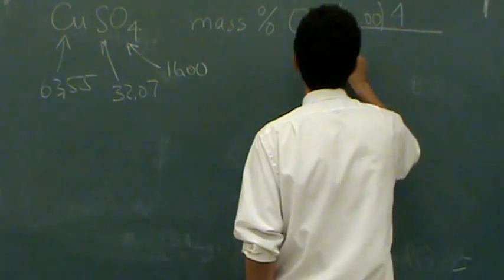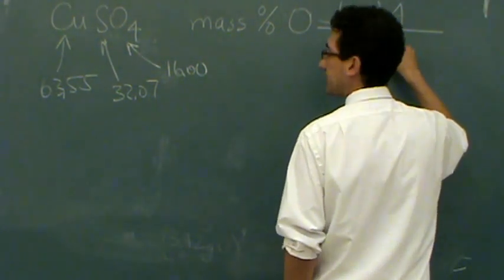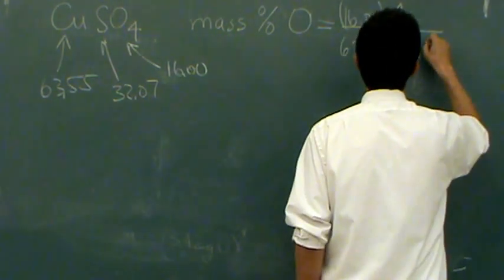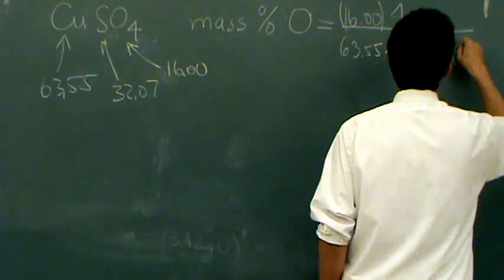Divided by the total mass, which is going to be 63.55, plus there's one sulfur, 32.07, and then there's four oxygens, four times 16.